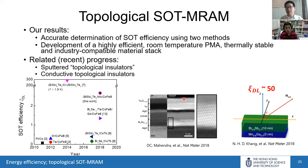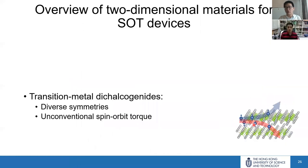In addition to bismuth selenide, people are exploring other materials. For bismuth antimony alloys — conductive topological insulators — damping-like torque efficiency as large as 50 has been achieved at room temperature, another order-of-magnitude improvement. This shows that topological insulators can really be the key to energy-efficient SOT memory. I hope I have convinced you that topological insulators are very good spin sources to generate spin-orbit torques for energy-efficient MRAM devices.